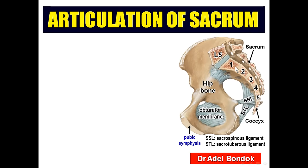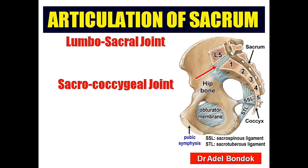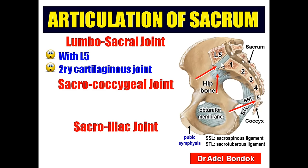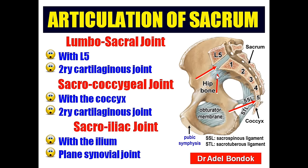The sacrum articulates with L5 — this is the lumbosacral joint; with the coccyx — this is the sacrococcygeal joint; and with the ilium of the hip bone — this is the sacroiliac joint. The midline joints are secondary cartilaginous joints: the lumbosacral joint with L5, and the sacrococcygeal joint with the coccyx. The sacroiliac joint is a plain synovial joint that permits gliding or sliding movement.